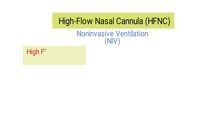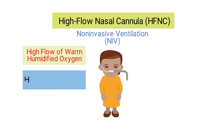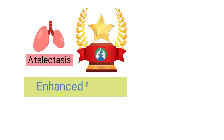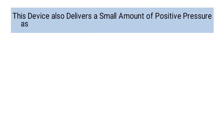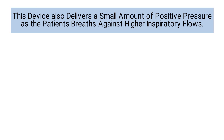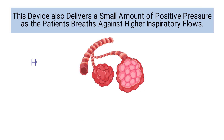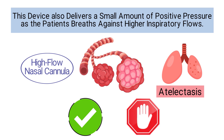Next up is a high flow nasal cannula, a type of non-invasive ventilation that delivers a high flow of warm humidified oxygen through a nasal cannula with larger prongs, allowing higher flow rates and providing the patient with a high level of comfort. It provides enhanced flow which helps wash out CO2 from anatomic dead space, delivers a more stable FiO2, and also delivers a small amount of positive pressure as the patient breathes against higher inspiratory flows. This helps with the recruitment of collapsed alveoli, which explains why a high flow nasal cannula is effective in treating and preventing atelectasis.